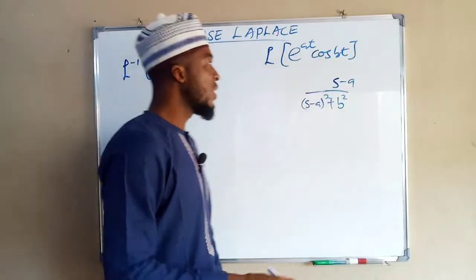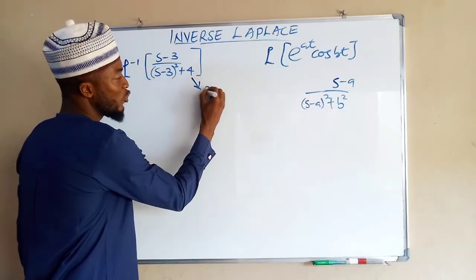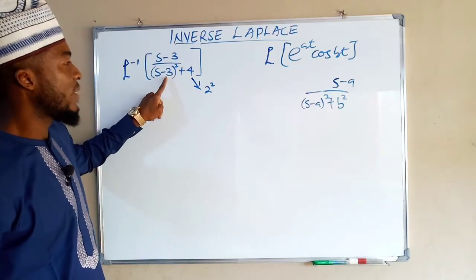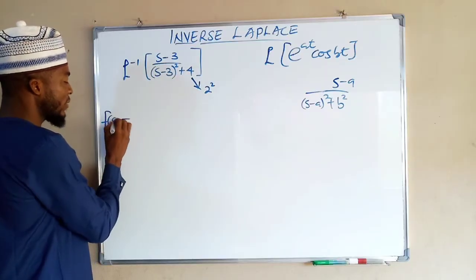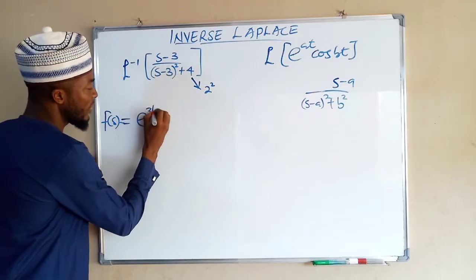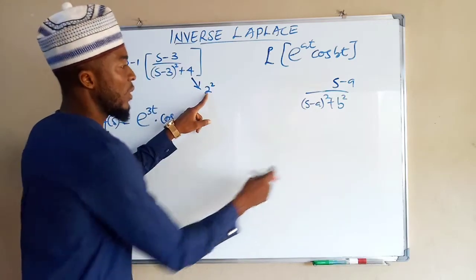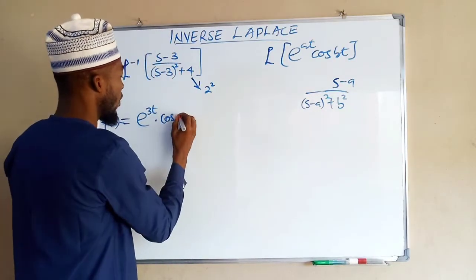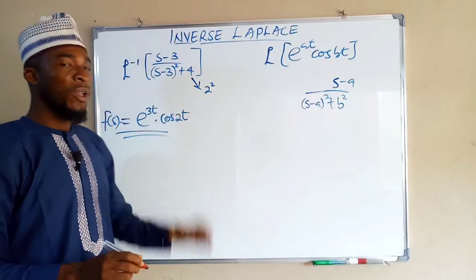The inverse Laplace transform gives back e^(at)cos(bt). Now, 4 can be written as 2², so our b is 2 and our a is 3. This equals e^(3t) multiplied by cos(bt), and since b is 2, we get cos(2t). Hence, this is the inverse Laplace transform of the given function.